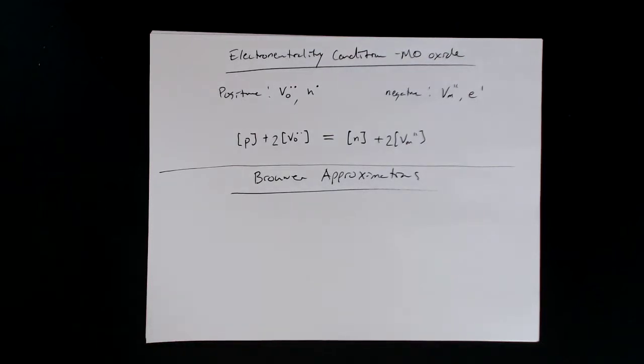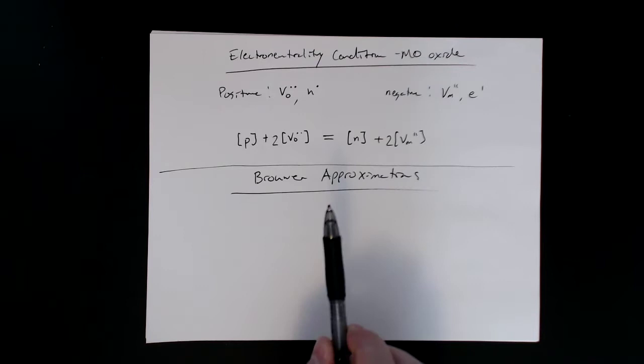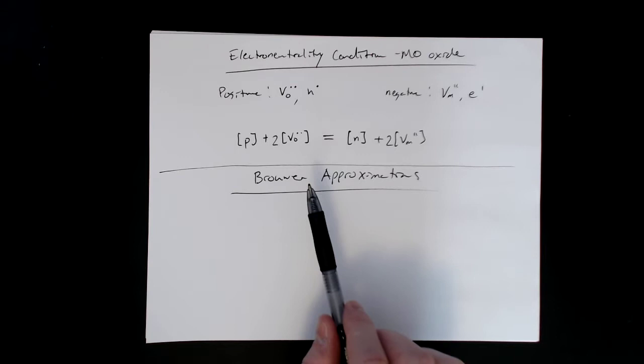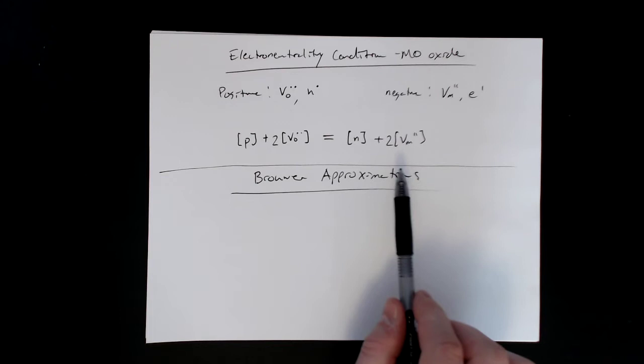All right, so let's talk about Brouwer approximations. A Brouwer approximation is basically an approximation that allows us to more easily solve for the simultaneous equations that we have with the mass action expressions and the electroneutrality conditions. It just makes it a little bit easier to solve these.